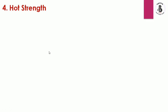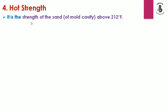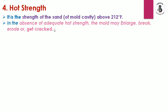Hot strength is the strength of the sand above 212 degrees Fahrenheit. In the absence of adequate hot strength, the mold may be enlarged, broken, eroded, or cracked.